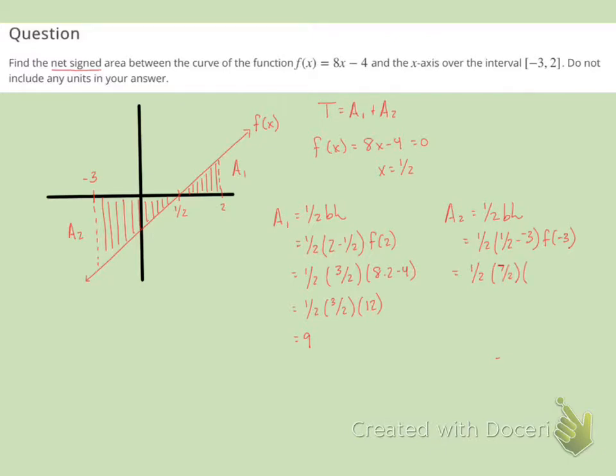So we'll have 1/2 plus 3. That's 3 and 1/2 or 7/2. And then when we evaluate this function at negative 3, we'll get 8 times negative 3 minus 4. So this will give us 1/2 times 7/2 times negative 28. And this will give us negative 49.